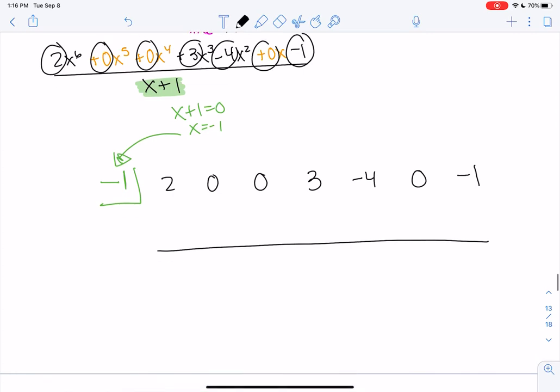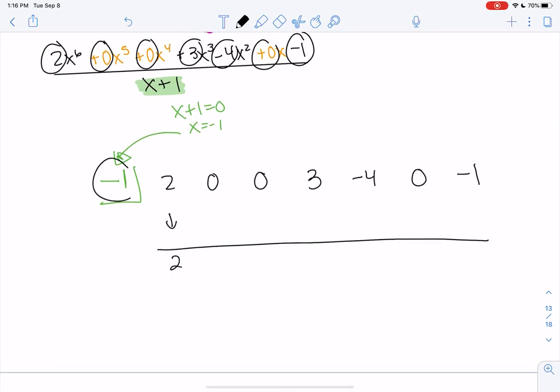Let's just go for it. So we bring the 2 down, and then we multiply. Negative 1 times 2 brings me to negative 2. And then we add the column, so we get negative 2. And then we do negative 1 times negative 2, and we get 2. Add them, and we get 2.